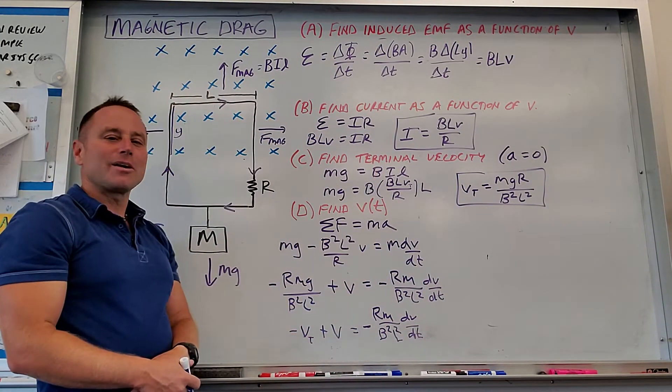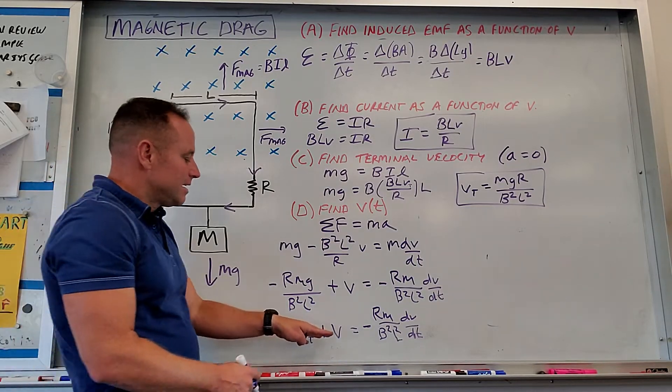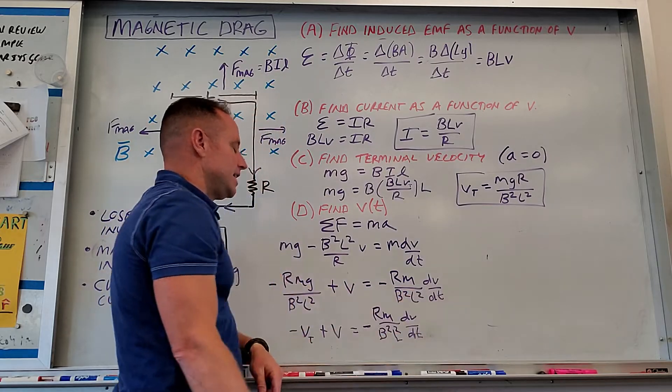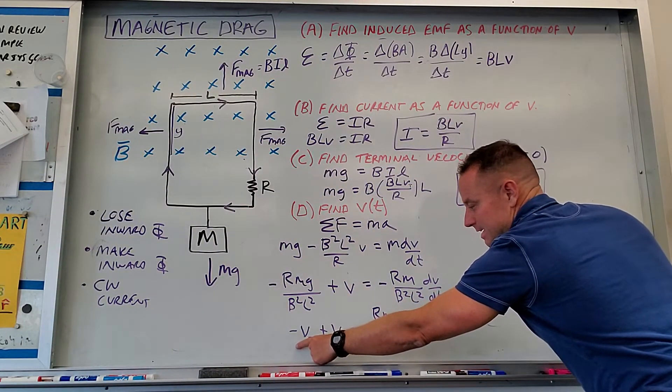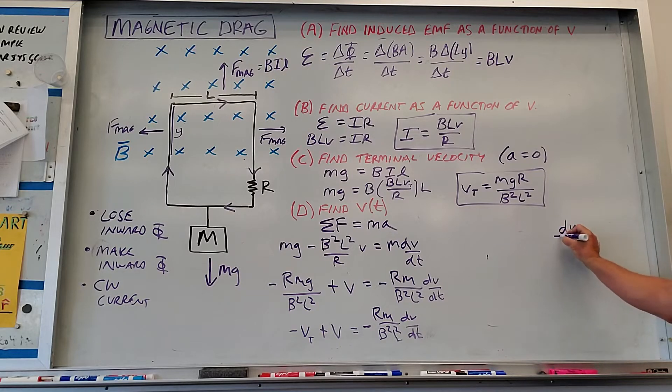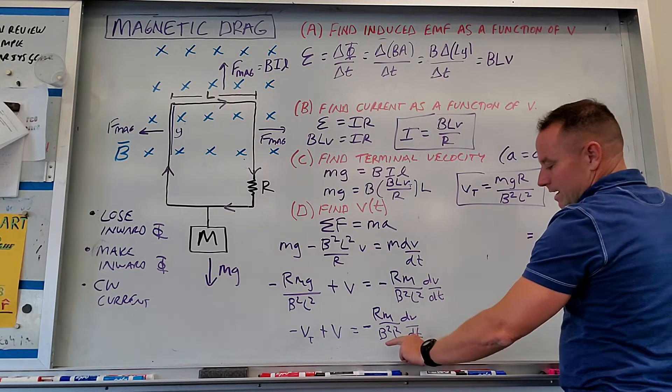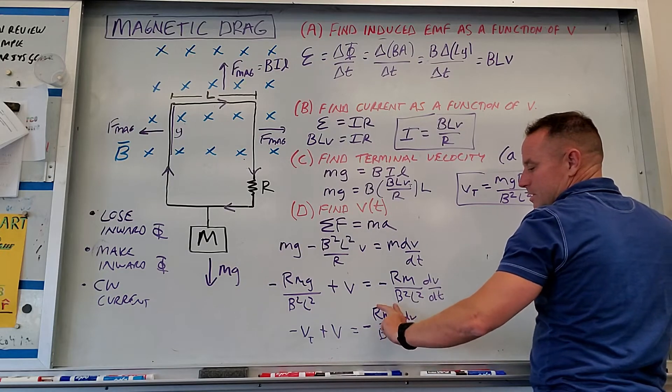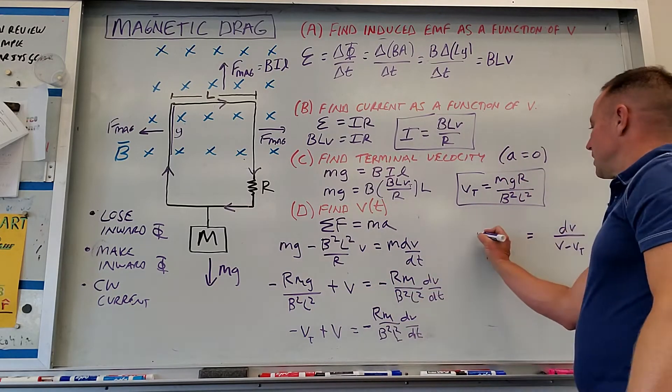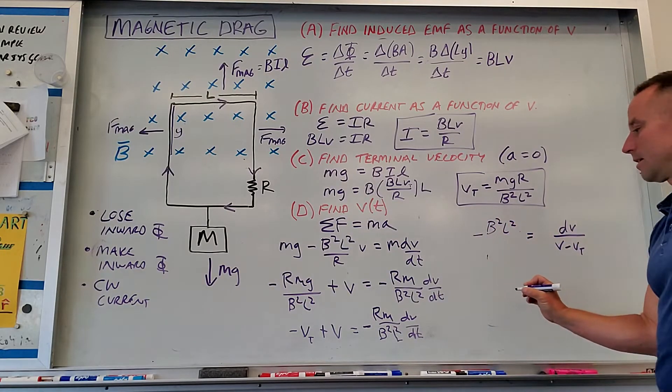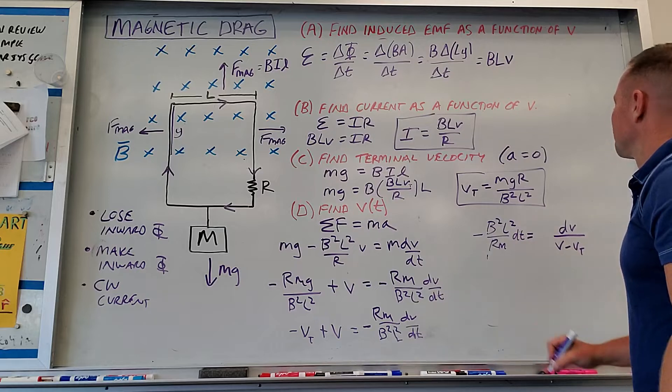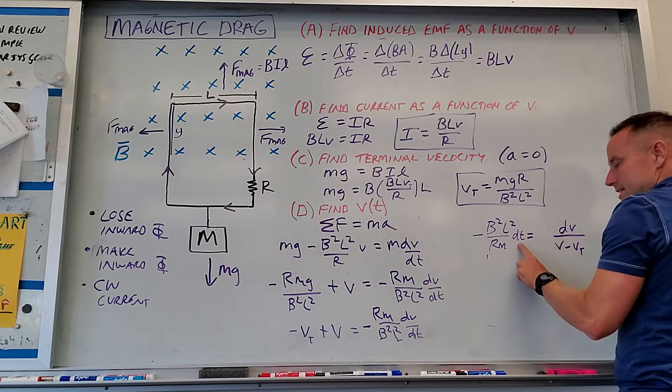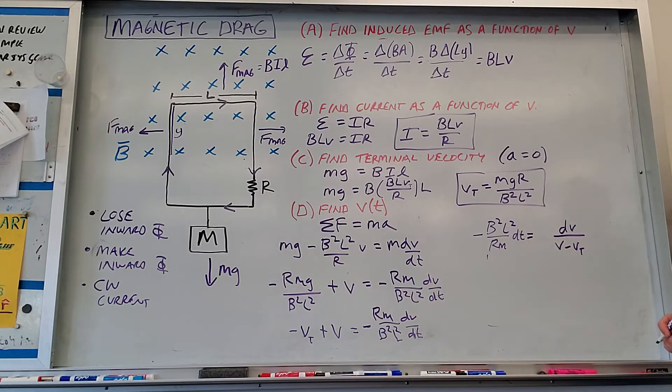So now we've got to separate this thing and integrate to solve for velocity. What I like to do is take the entire left-hand side and shove it under the dV, and then everything else put back on the left. So in other words, this V minus VT that's here, I'm just going to put it under the dV. So we get dV over V minus VT equals, and then everything else I'm going to put back on the left. So it's going to be the reciprocal of this stuff. So you're going to get minus B squared L squared over RM DT. So the equation has been successfully separated because I just have dt on this side and dV and V on this side. So now we're ready to integrate.